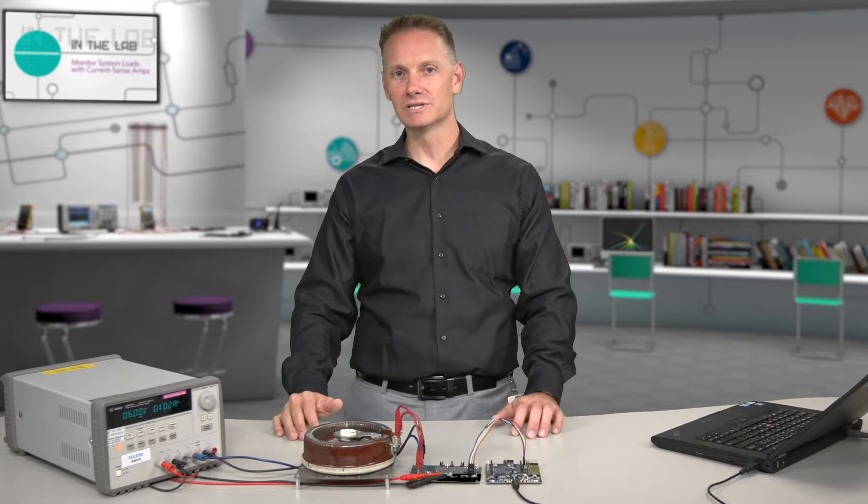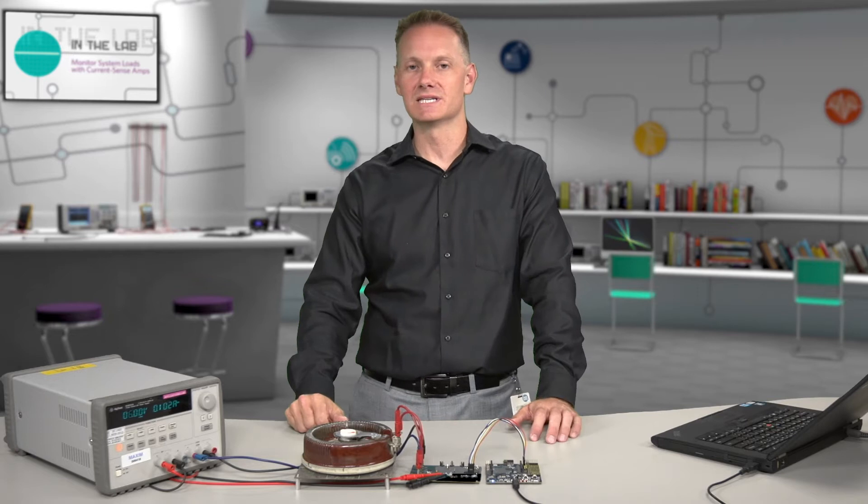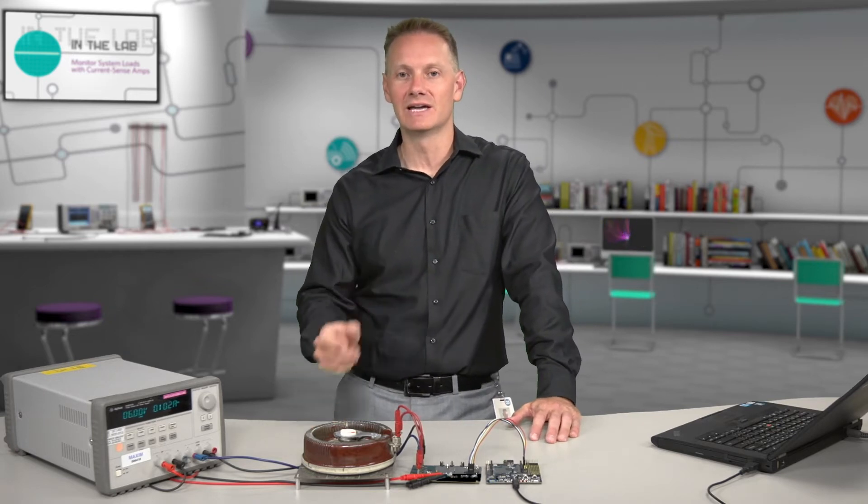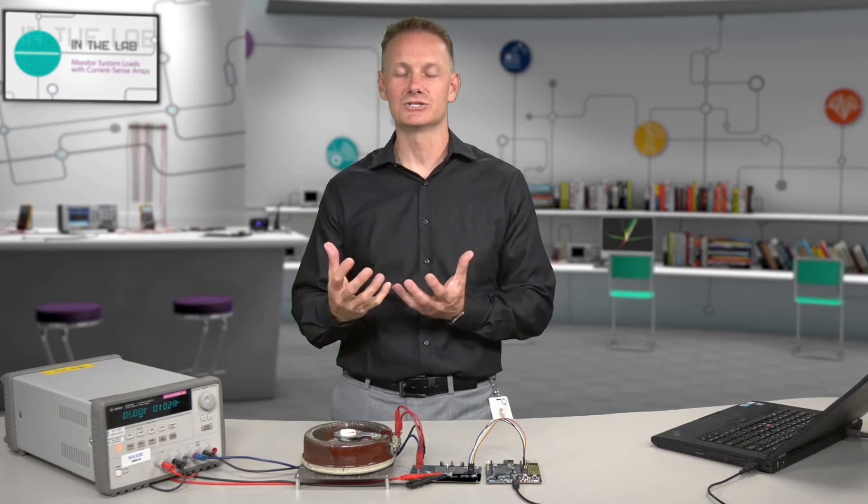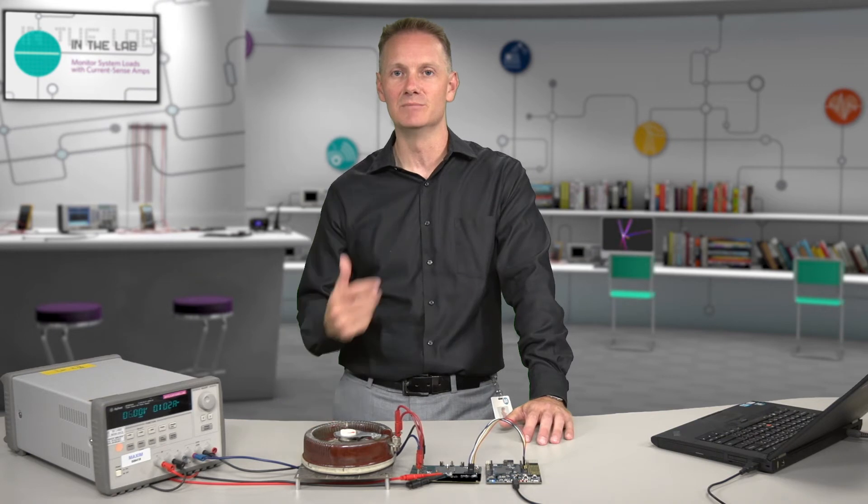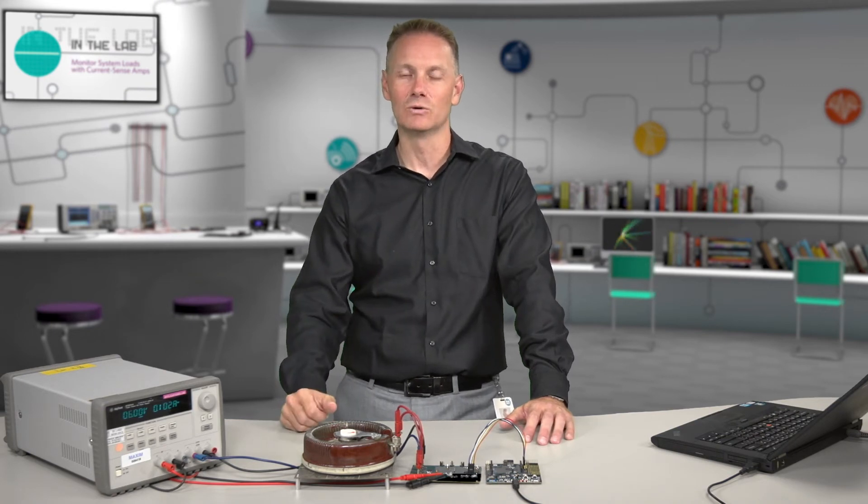CurrentSense amps are really great where you need a wide dynamic range and a good way to think about CurrentSense amps is a little piece of analog hardware insurance. So for just a small amount of size and cost you can add this insurance and current monitoring into your devices to make them more robust and higher quality.